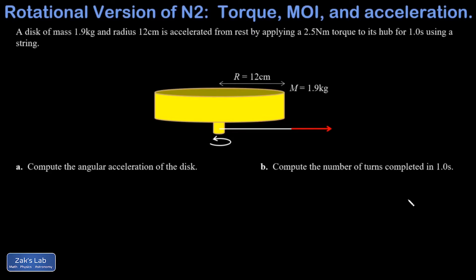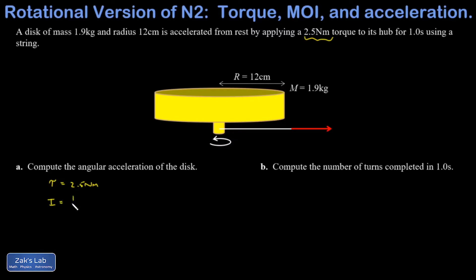Let's apply our rotational version of Newton's second law to a problem. I have a disk of mass 1.9 kilograms and radius 12 centimeters. It's accelerated from rest by applying a 2.5 Newton meter torque to its hub for 1.0 seconds using a string. In this case we're actually told how big the torque is. I want to compute the angular acceleration, so I need the torque — 2.5 Newton meters — and the moment of inertia.